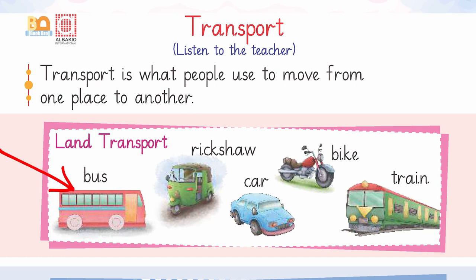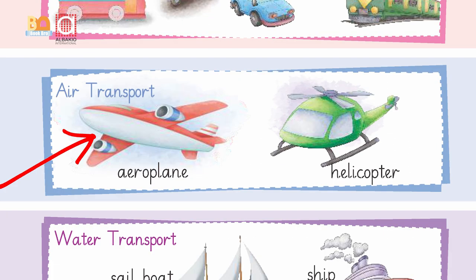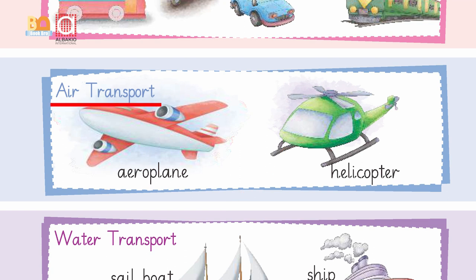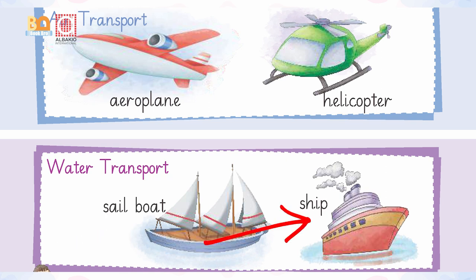Bus, rickshaw, car, bike, and train are land transport. Whereas aeroplane and helicopter are air transport. And when we talk about water transport, sailboat and ship are its examples.